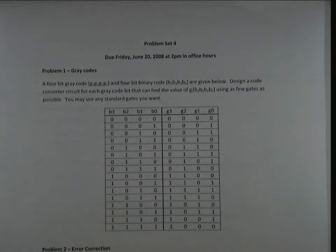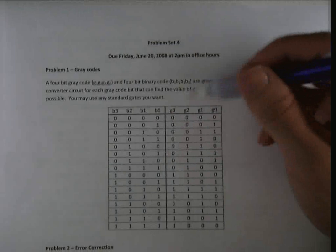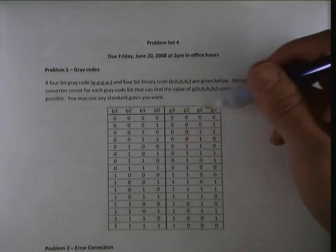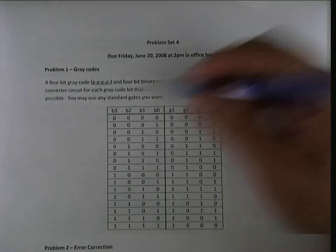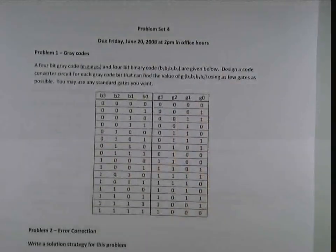This is a standard code conversion example, and essentially I'm going to create functions g3, g2, g1 in terms of these. It says use as few gates as possible, and I may use any standard gate I want.